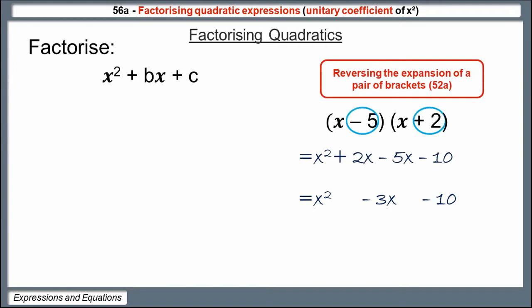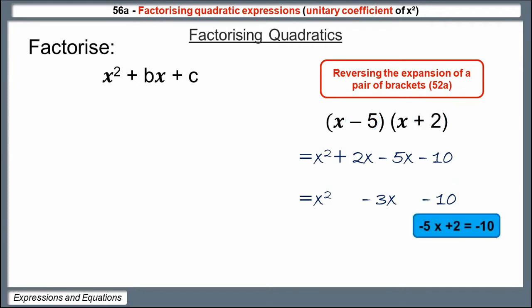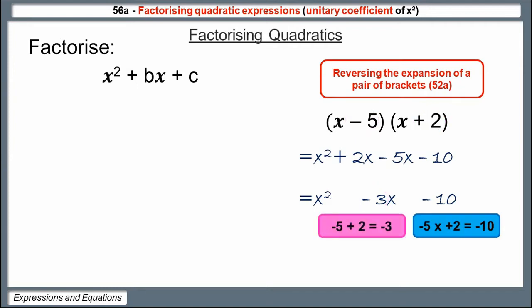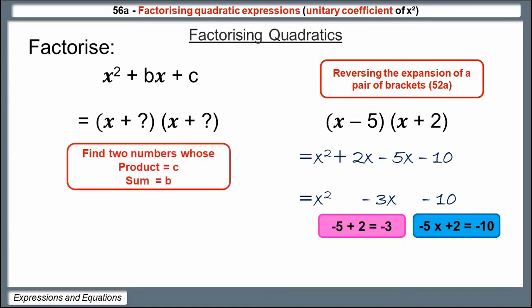What's the link between minus 5, plus 2, and minus 10? If you multiply minus 5 by plus 2, you get minus 10. And what's the link between minus 5, plus 2, and minus 3? If you add minus 5 to plus 2, you get minus 3. So factorising boils down to finding two numbers whose product is c and whose sum is b — two values that multiply together to make the constant c and add together to make the coefficient of x, b.